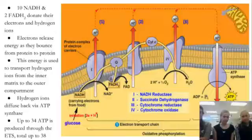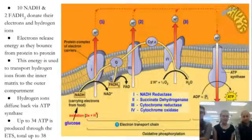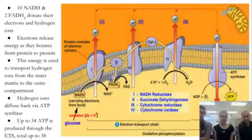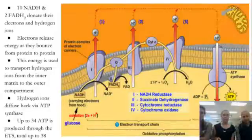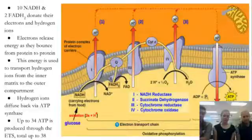The electrons are bounced from one embedded protein to the next, and with each bounce they release a small amount of energy. Similar to photosynthesis, this energy is used to actively transport hydrogen ions through the membrane into the outer compartment, which sets up a hydrogen ion gradient.